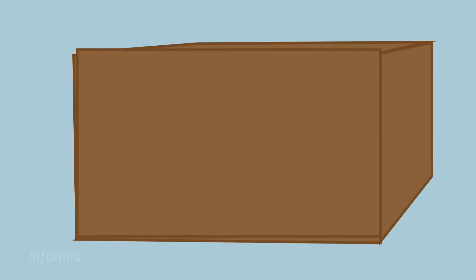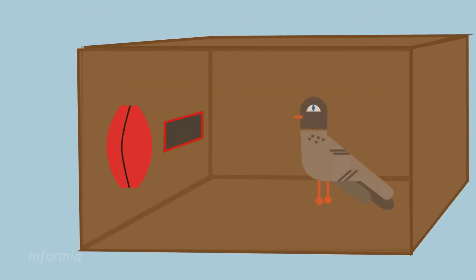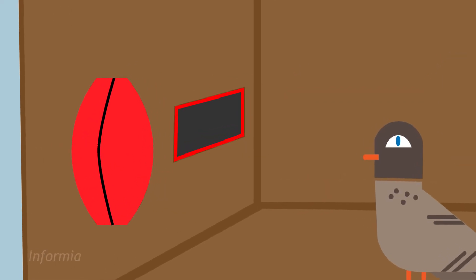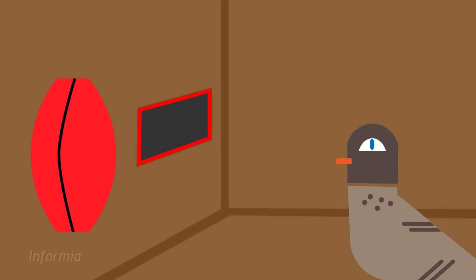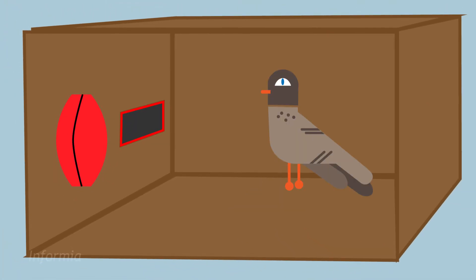Skinner did a simple experiment. He took a pigeon and put it inside a box. The box was empty, except for a button on one of its sides. When the pigeon pecked at the button, a small door opened, and a small piece of food entered the box.